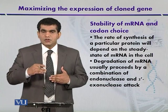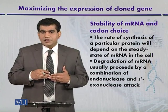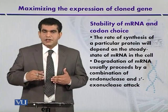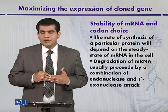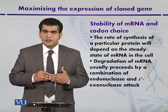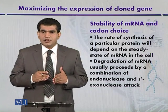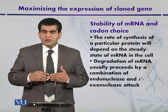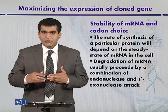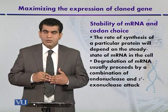Codon choice depends upon two factors. The first factor is the transfer RNA availability ratio inside the cell. The second factor is whether the third base of the codon is a pyrimidine — that is, whether it contains cytosine or uracil. The presence of a pyrimidine at the third position of the codon can also influence the expression of the cloned gene.